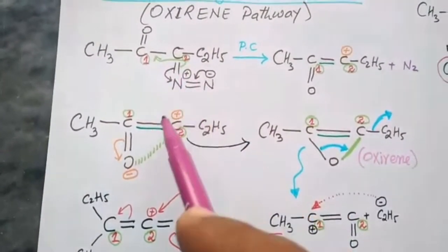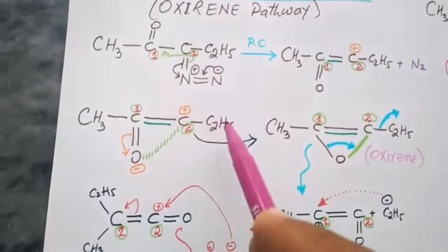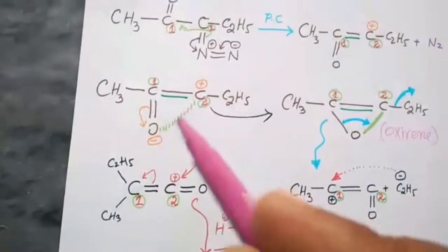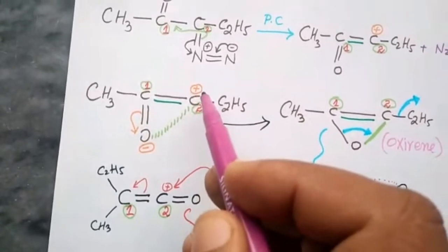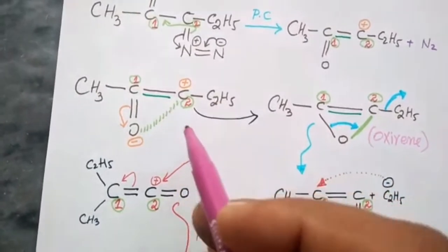The double bond will form and on this carbon a positive charge will appear. This carbon has ethyl group attached and one methyl group. Now look here, on this oxygen there's a negative charge and here there's positive charge, so negative and positive will attract each other forming a cyclic compound.